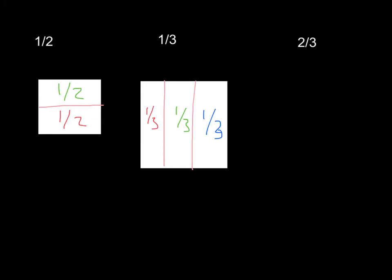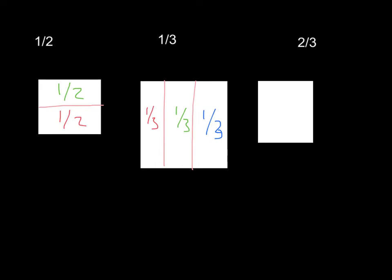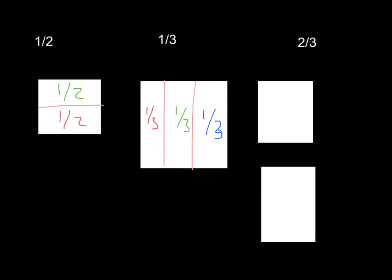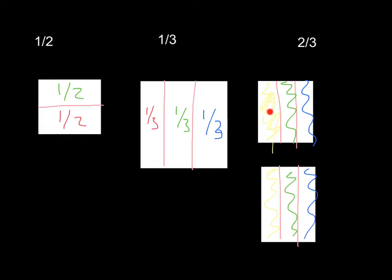Now what about two thirds? That one's going to be a little bit different. We're going to start with two rectangles divided into three pieces each. Each person would get an equal amount — if I have three people, each person would get two thirds. They would get one third from the first rectangle and one third from the second. So two out of three pieces, two wholes, three pieces each.